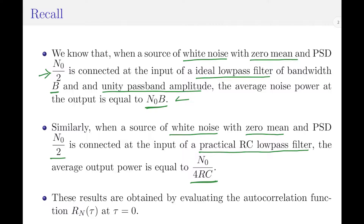It should be noted that these results are obtained by evaluating the autocorrelation function at the output of the filter, which is Rn(τ) at τ = 0. For the practical RC low pass filter, the 3 dB bandwidth is equal to 1/(2πRC). From these two points, we understand that the output of both the ideal and the practical filters have a finite average power proportional to the bandwidth of the filter. Therefore, it is quite important to define the noise equivalent bandwidth to generalize and extend this theory to all kinds of low pass filters.